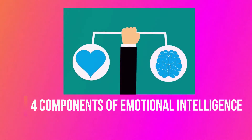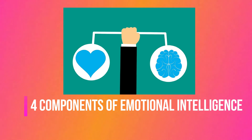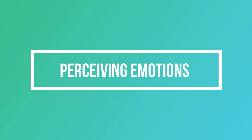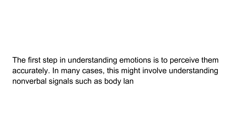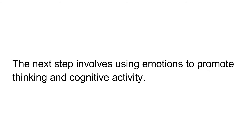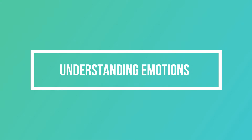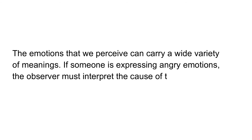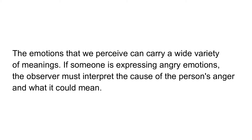These are the four components of emotional intelligence. First, perceiving emotions — the first step in understanding emotions is to perceive them accurately. In many cases, this might involve understanding non-verbal signals such as body language and facial expressions. Second, reasoning with emotions — the next step involves using emotions to promote thinking and cognitive activity. Third, understanding emotions — the emotions that you perceive can carry a wide variety of meanings. If someone is expressing angry emotions, the observer must interpret the cause of the person's anger and what it could mean.